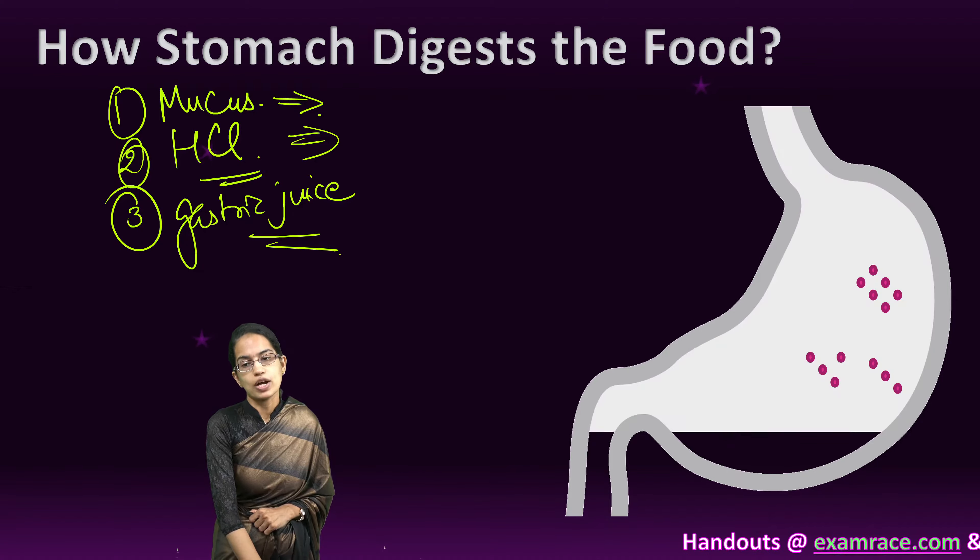Gastric juice, or digestive juice, has an important function: the food particles are churned or broken down into smaller particles. So gastric juice breaks down particles into smaller forms. Hydrochloric acid kills bacteria, and mucus is the inner lining of the stomach that protects it from the hydrochloric acid. This hydrochloric acid is also known as muriatic acid, and it is secreted by the parietal cells in the gastric glands.